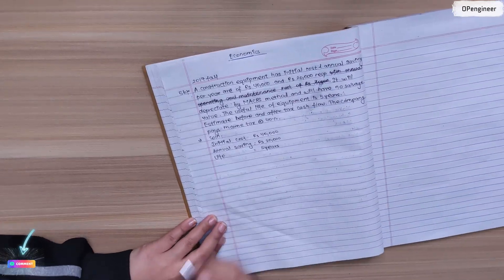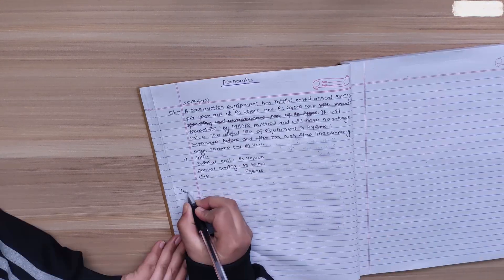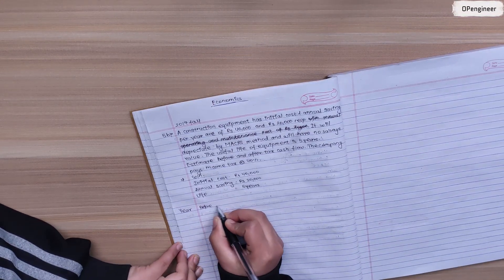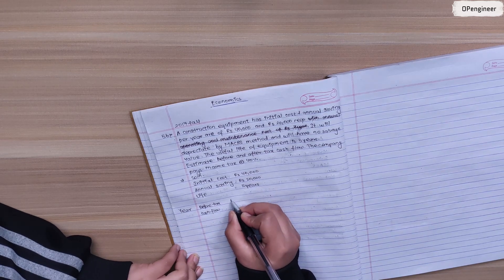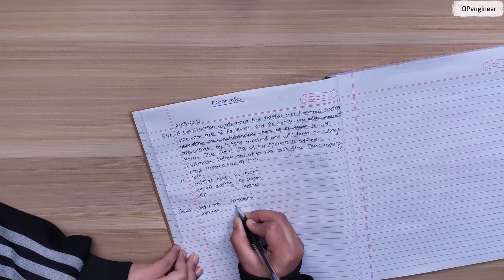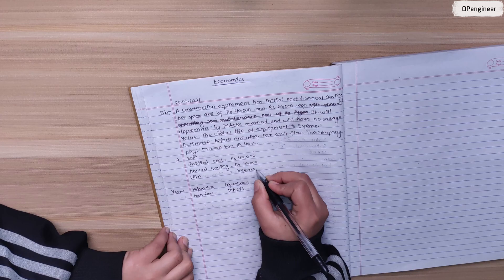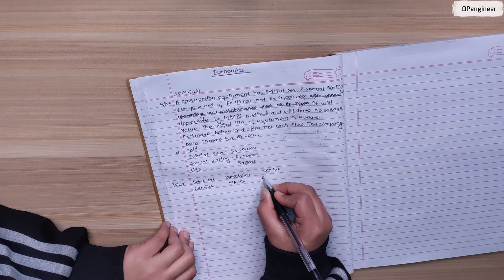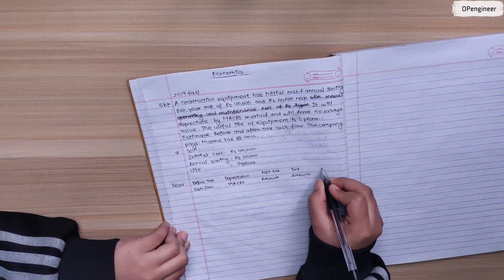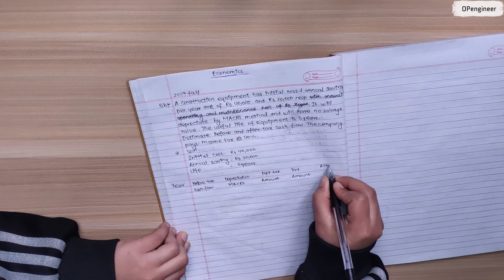Let's start the table. In the table, the first column is year. Next is before tax cash flow. Then depreciation by CRS method. Next is net taxable amount. Then tax amount. And finally after tax cash flow.